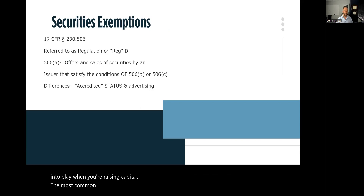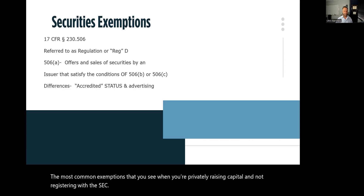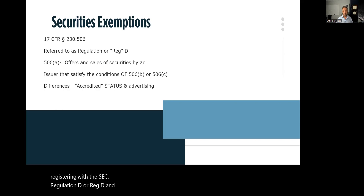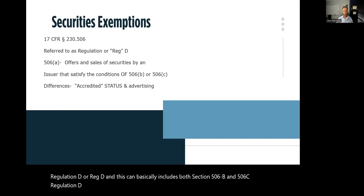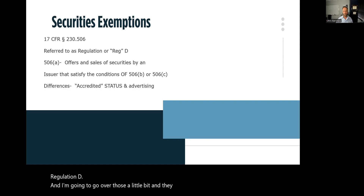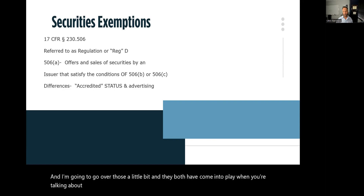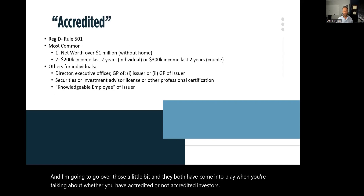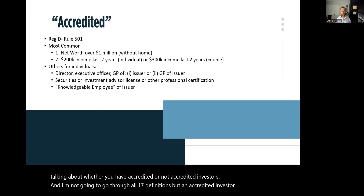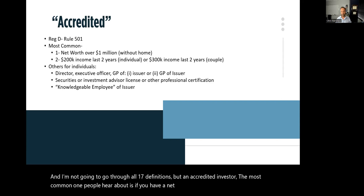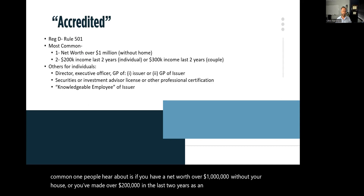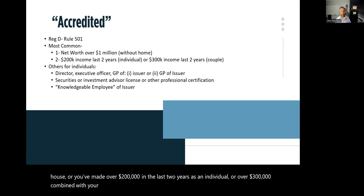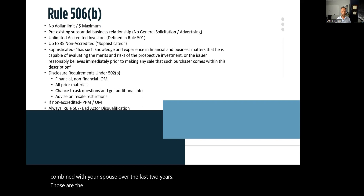The most common exemptions when privately raising capital without registering with the SEC fall under Regulation D, or Reg D, which includes both Section 506B and 506C. Both come into play when considering whether you have accredited or non-accredited investors. The most common accredited investor definitions are: net worth over $1 million excluding your home, income over $200,000 individually in the last two years, or over $300,000 combined with a spouse over the last two years.